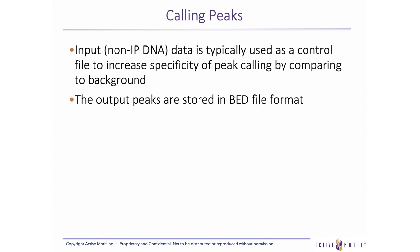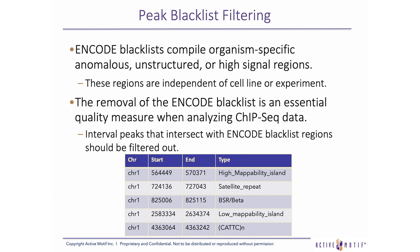Input data, which is non-IP DNA, is typically used as control files to increase specificity of peak calling by comparing to background. The input can be pooled among all or specific groups of samples depending on the experimental design. The output peaks are stored in a BED file, which is a tab-delimited text format. The ENCODE consortium produces lists of organism-specific regions where signal is anomalous, unstructured, or unusually high. Since these high-signal regions, or blacklists, are independent of cell line or experimental conditions, it is essential to remove these regions from predicted peaks, done by filtering out interval peaks that intersect with ENCODE blacklist regions using a tool such as BEDTools Intersect.